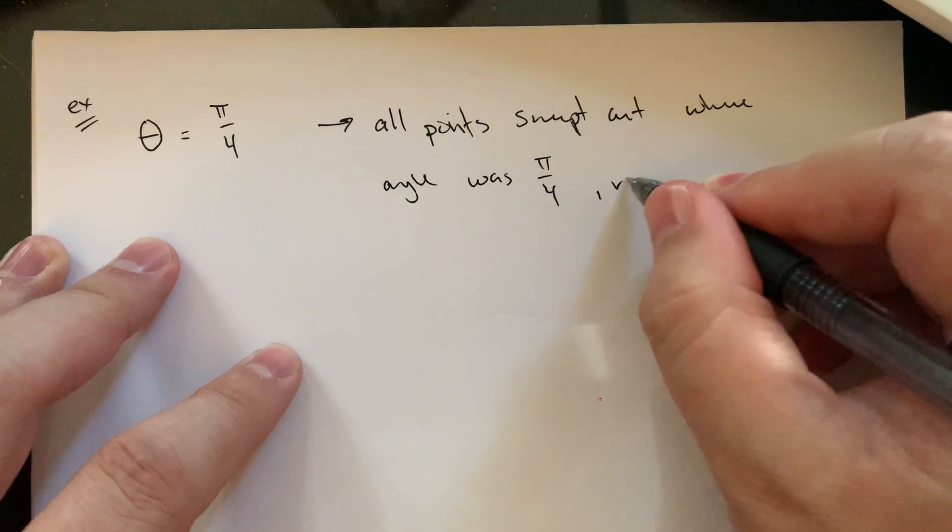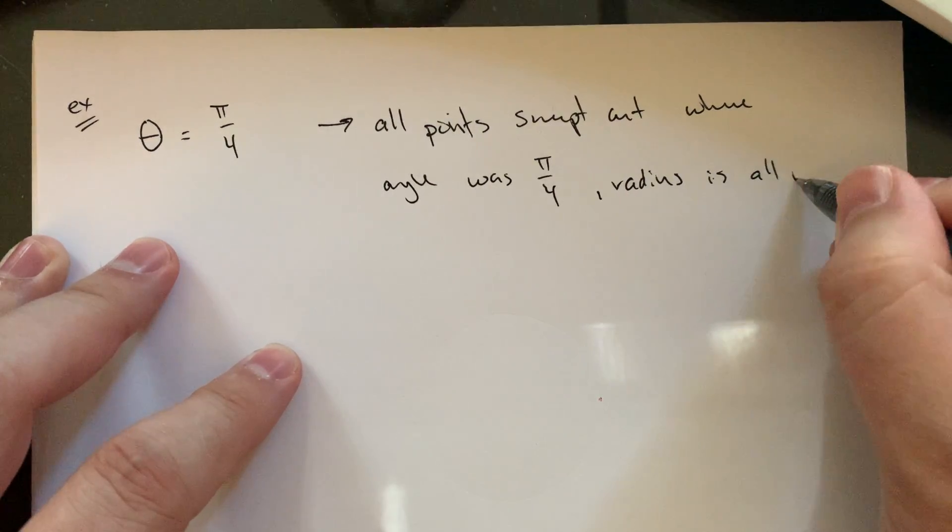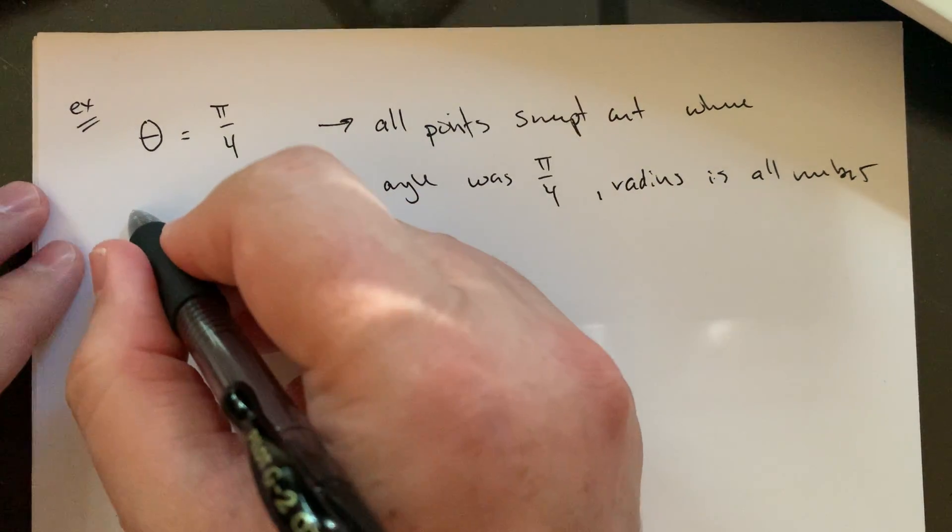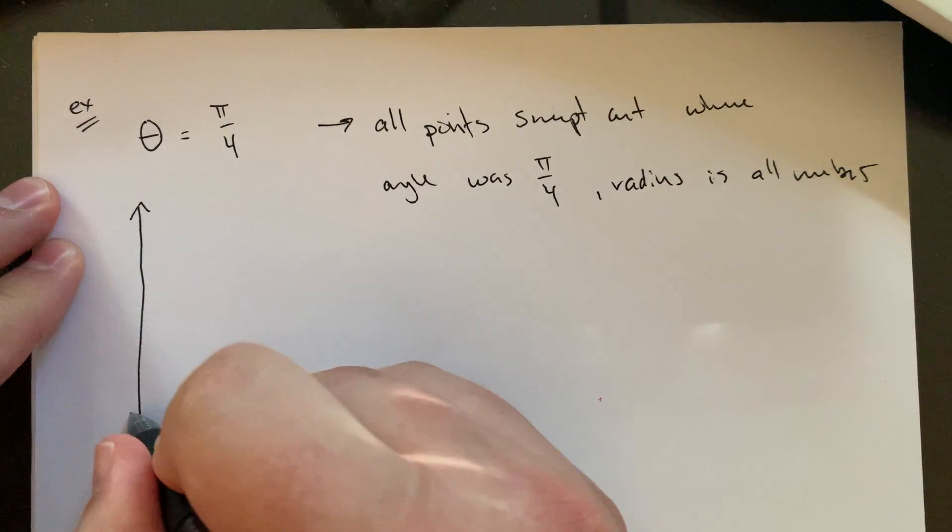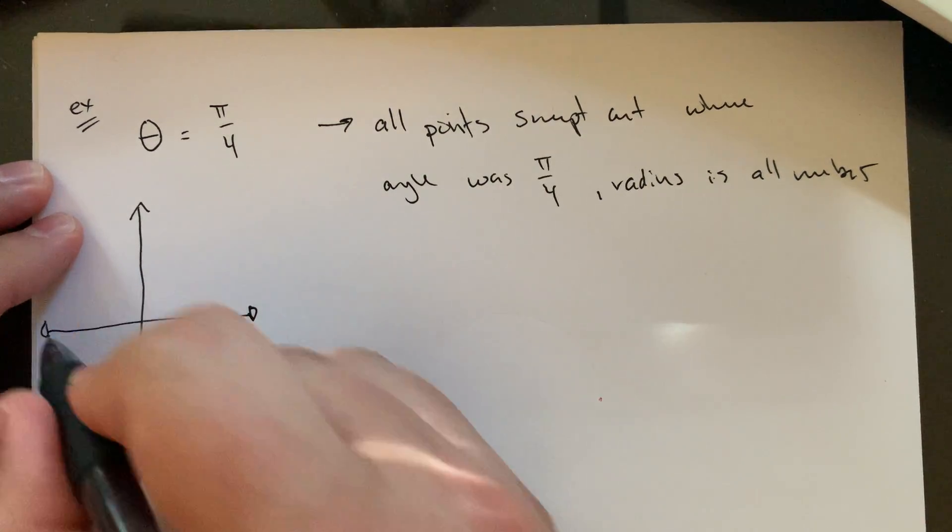So this would be all the points swept out where your angle was pi over four, but your radius is all numbers, positive or negative.